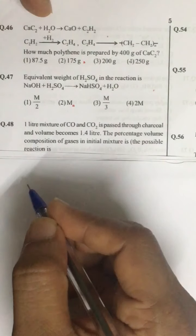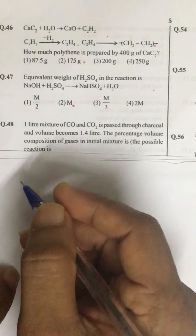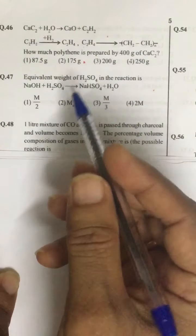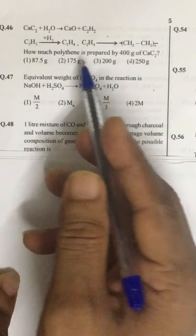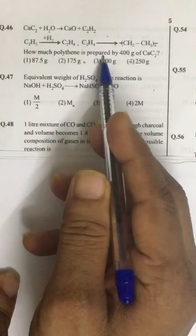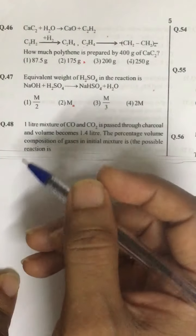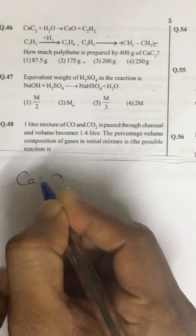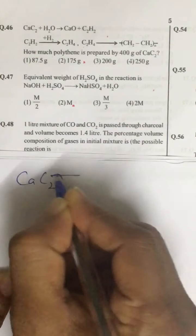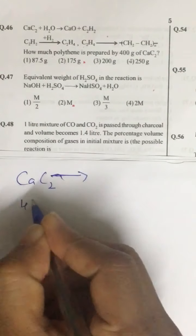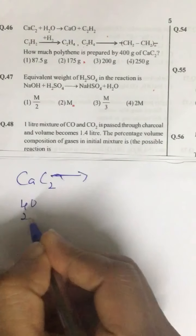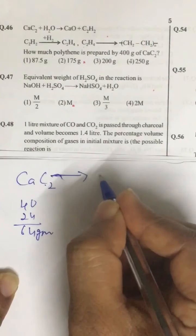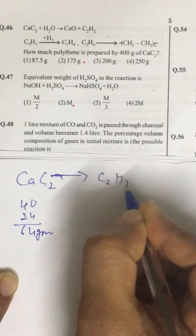We are given calcium carbide reacts with water to produce acetylene and then acetylene is hydrogenated to give ethene and we are given that polythene is getting formed. Question is how much polythene is prepared from 400 grams of calcium carbonate. Now if you look at calcium carbide, the molar mass is 40 plus 24 that is equal to 64 grams. 64 grams is producing 26 grams of acetylene.